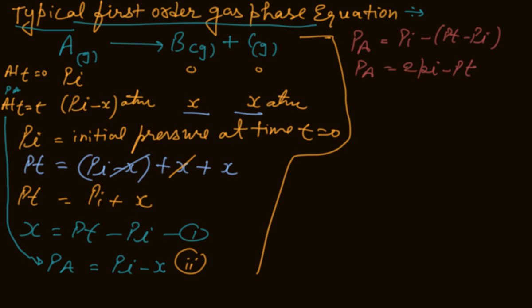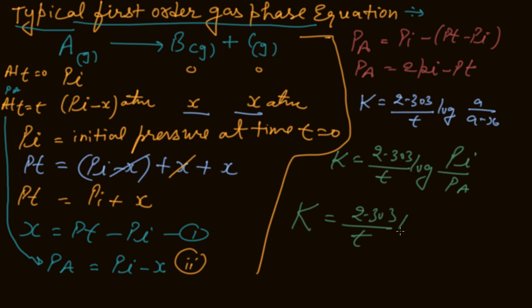So like the first order equation K equals 2.303 by T log A upon A minus X, the same is coming now in this equation. K equals 2.303 by T log Pi upon PA. Simply put the value of PA here. So K equals 2.303 by T log Pi upon (2Pi minus PT). This is the very important difference by putting the value here.